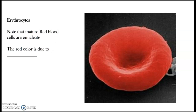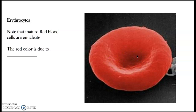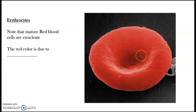First of all, we're going to discuss the erythrocytes or red blood cells. Note that they are biconcave in shape and they have no nucleus — they are enucleated. They are red because of the hemoglobin. They are 95% of our blood, which is why our blood is red. They also have no mitochondria.